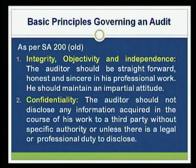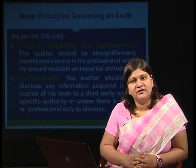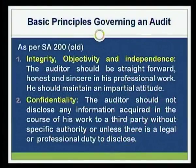The second principle is confidentiality. It means that information should be furnished only when required under any statute or for professional reference. The auditor should not disclose any information acquired in the course of his work to a third party without specific authority, unless there is a legal or professional duty to disclose. For example, if financial statements are required by an income tax authority, the auditor is required to provide such information; otherwise, it should not be given to any unrelated third party.